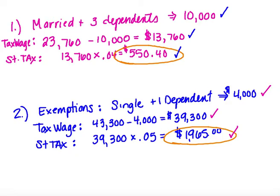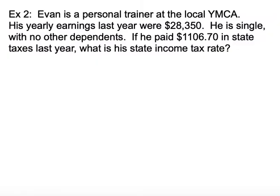We're going to do one more example together. This one has an algebra component, so we're not going to have everything straightforward — we'll be missing something in the middle. In example two, Evan is a personal trainer at the local YMCA. His yearly earnings last year were $28,350 and he is single with no other dependents. If he paid $1,106.70 in state taxes last year, what is his state income tax rate? We'll call the rate R — that's our missing information.